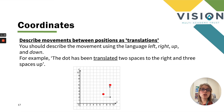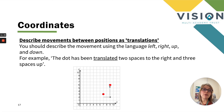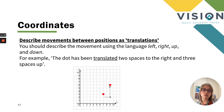We can also describe positions and movements between positions on a coordinate graph as translations. Translations help describe movement left, right, up and down. For example, the red dot was originally at (7, 3). When translated two spaces to the right it becomes 9, and three spaces up it becomes 6, so the new position is (9, 6). We can talk about translations as movements — left, right, up and down.